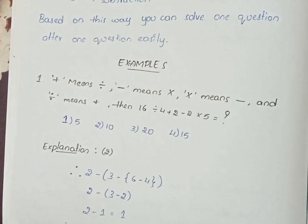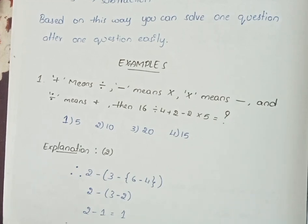Explanation: The answer is 2. Therefore, 2 minus bracket 3 minus curvy bracket 6 minus 4 bracket, 2 minus bracket 3 minus 2, 2 minus 1 equals to 1.